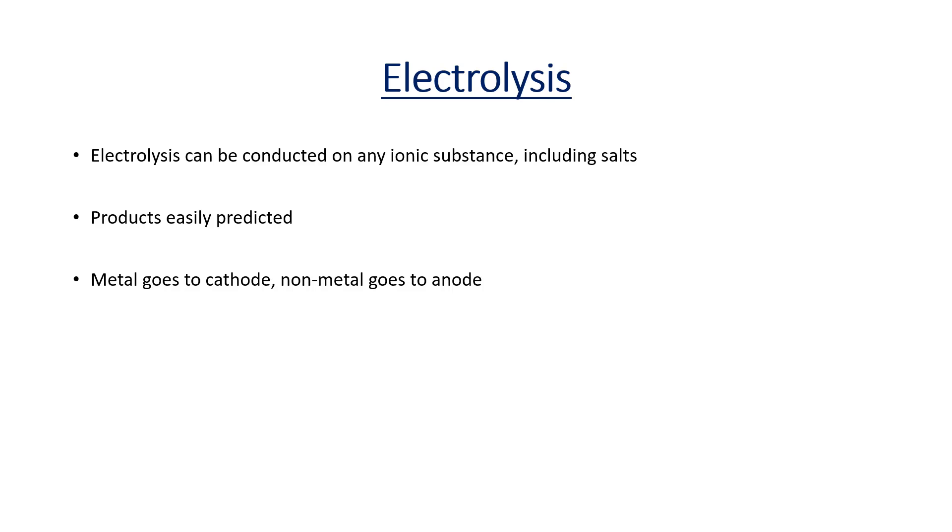As I said, a metal ion almost always has a positive charge. Therefore the metal product in electrolysis will always go to the cathode, the negatively charged electrode. The non-metal always having a negative charge will go towards the anode which is the positively charged electrode.